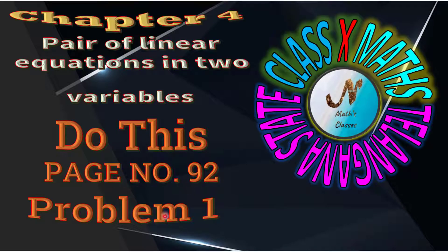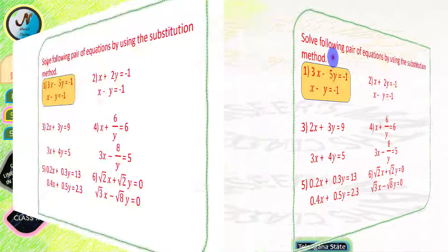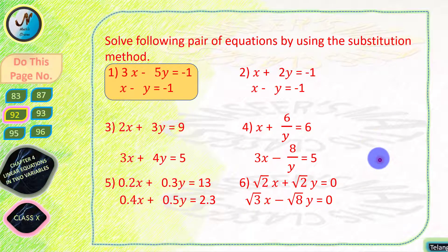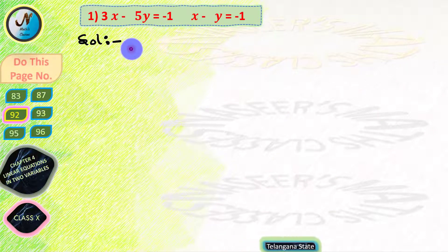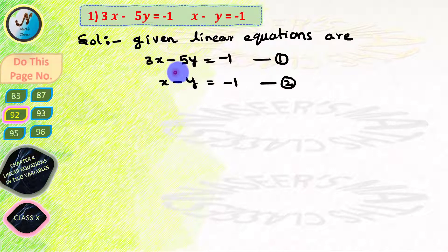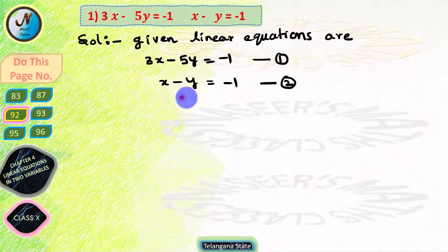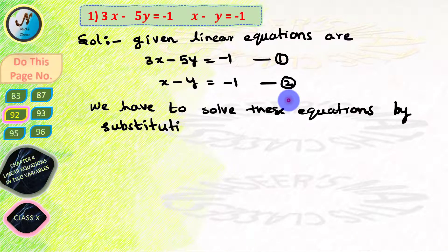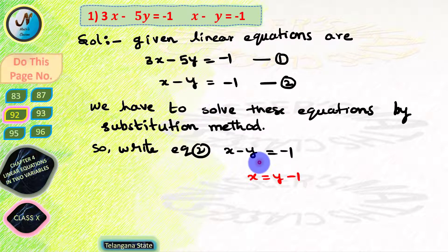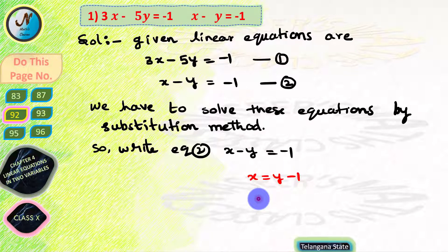We are going to solve page number 92, problem 1. Total 6 problems are given. We have to solve these pairs of linear equations by substitution method. The given pair of linear equations are: 3x minus 5y equals minus 1 — let this be equation 1 — and x minus y equals minus 1 — let this be equation 2.